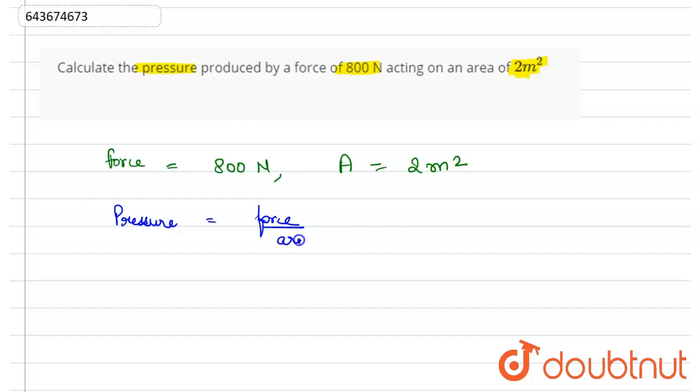Applying the given data, it will be equal to 800 Newtons upon 2 meter square, so this equals 400 Newtons per meter square, or 400 Pascal. This is the correct answer: 400 Pascal, which can also be written as 400 Newtons per meter square. Hope you understood this well.